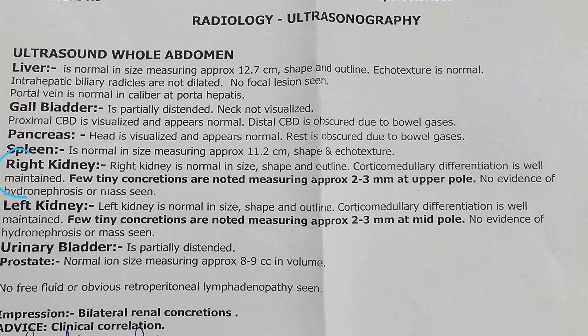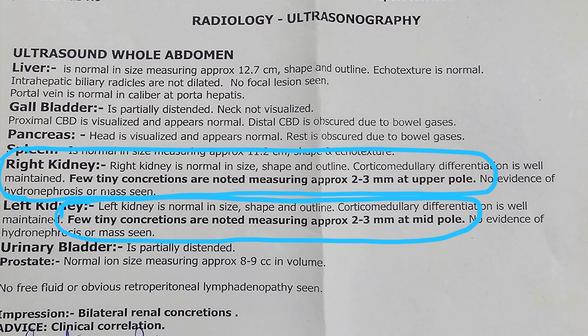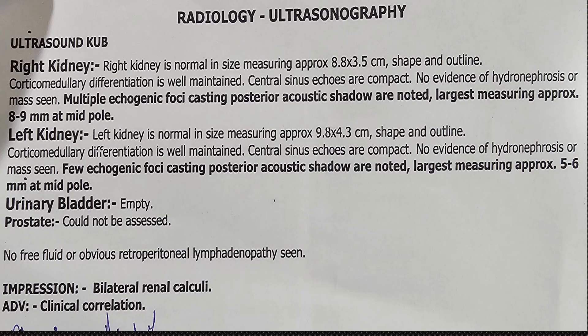This is a sample report of an ultrasound whole abdomen. Focus on the kidney — on the right kidney, they have marked normal size and shape, and in bold they have mentioned few tiny concretions measuring up to 2 to 3 mm. On the left kidney also they have marked the same, measuring 2 to 3 mm at mid-pole. In the impression they mention bilateral renal concretion.